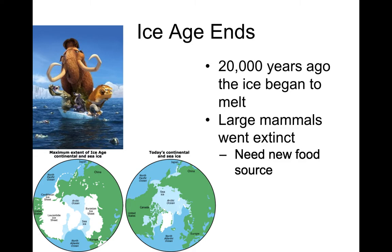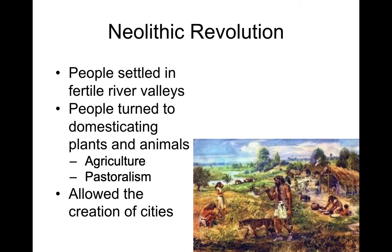Around 20,000 years ago the ice age starts to end — that process that began about 1.6 million years ago. You see the ice shrinking back, oceans gaining more water, and temperatures changing drastically. A kind of global warming was happening, and large mammals were struggling to adapt. Creatures like the saber-toothed tiger, giant sloths, mammoths, and mastodons were all dying out because they couldn't adjust to the new environment.